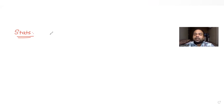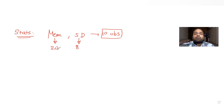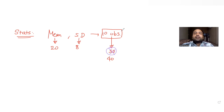The question tells us that the mean and standard deviation of 10 observations are given — mean is 20 and standard deviation is 8. Further, we have been told that later on it was observed that out of these 10 observations, one observation was marked incorrect and it was recorded as 50 instead of 40. So 50 was the wrong recorded observation and 40 was the correct one.